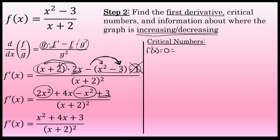Critical numbers occur where the first derivative equals zero and where it doesn't exist. The first derivative equals zero when the numerator equals zero. Setting x squared plus 4x plus 3 equal to zero: this factors to x plus 3 times x plus 1, so x equals negative 3 and x equals negative 1. Those are two critical numbers of this function.